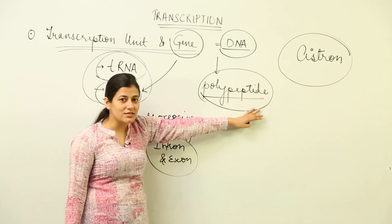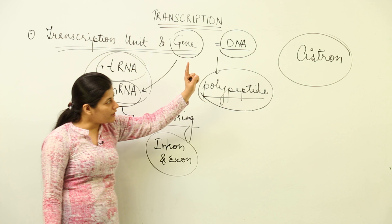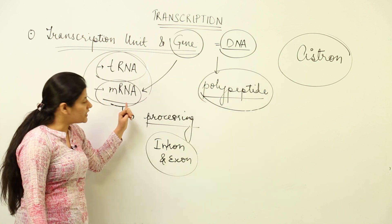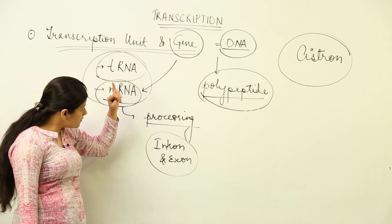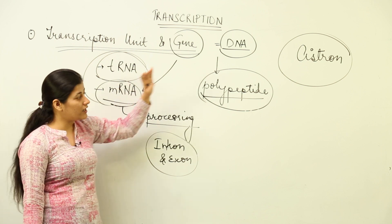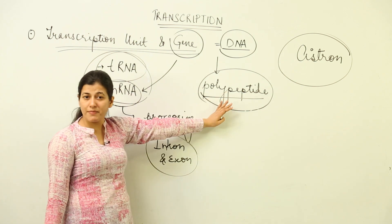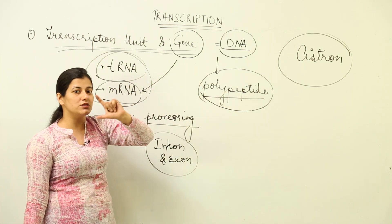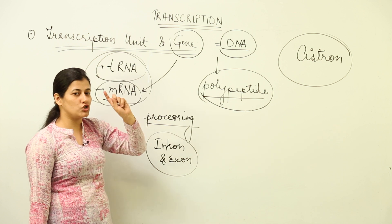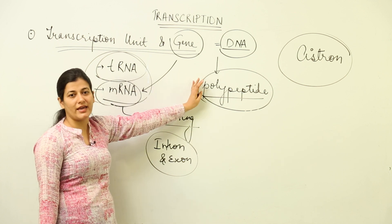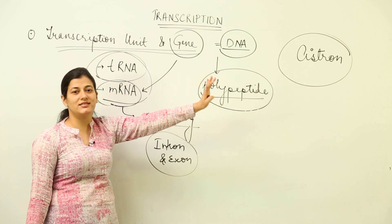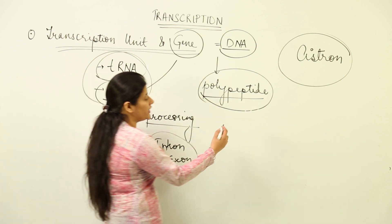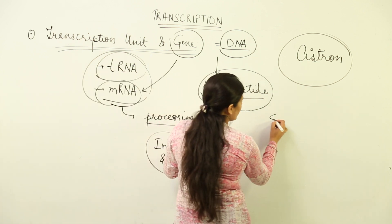From the cistron, messenger RNA is being formed, and from this messenger RNA a polypeptide is being formed. So we get that sequence of DNA which codes for the polypeptide, and that is known as the cistron. Now, you have to remember one thing: eukaryotes have monocistronic DNA.